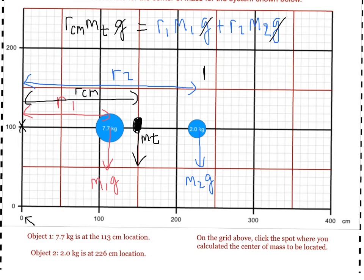And when we solve, we get the distance to the center of mass from our reference point is equal to distance to the first particle times its mass, plus the distance to the second particle times its mass, divided by the total mass of the system.